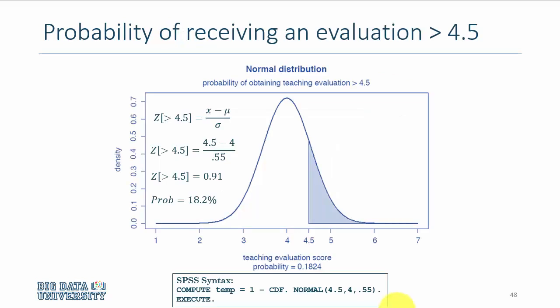Lastly, we can compute the probability of an event or value being achieved. What is the probability of an instructor getting a teaching evaluation of greater than 4.5? We know the mean is around 4. This is the probability, the shaded area you're looking at. The way you do it is you take 4.5, which is the value, subtract the mean value of 4, and divide it by the standard deviation of 0.55. You get the statistic as 0.91.